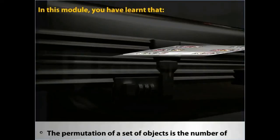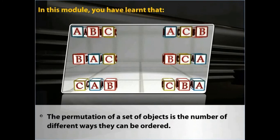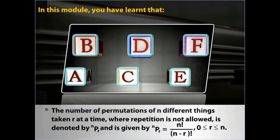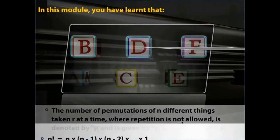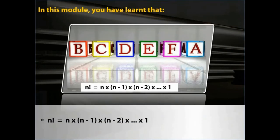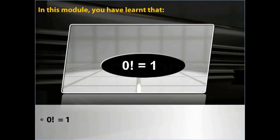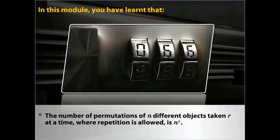In this module, you have learnt that the permutation of a set of objects is the number of different ways they can be ordered. The number of permutations of n different things taken r at a time, where repetition is not allowed, is denoted by nPr and is given by nPr = n factorial upon (n − r) factorial, where r is greater than or equal to zero and less than or equal to n. n factorial equals n × (n − 1) × (n − 2) × … × 1. Zero factorial is equal to 1. The number of permutations of n different things taken r at a time, where repetition is allowed, is n raised to the power r.